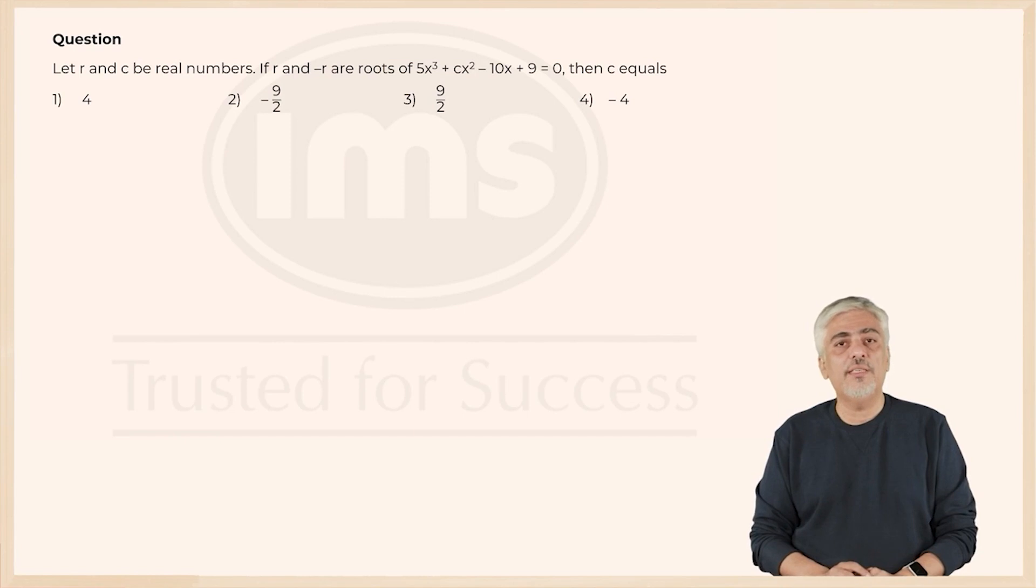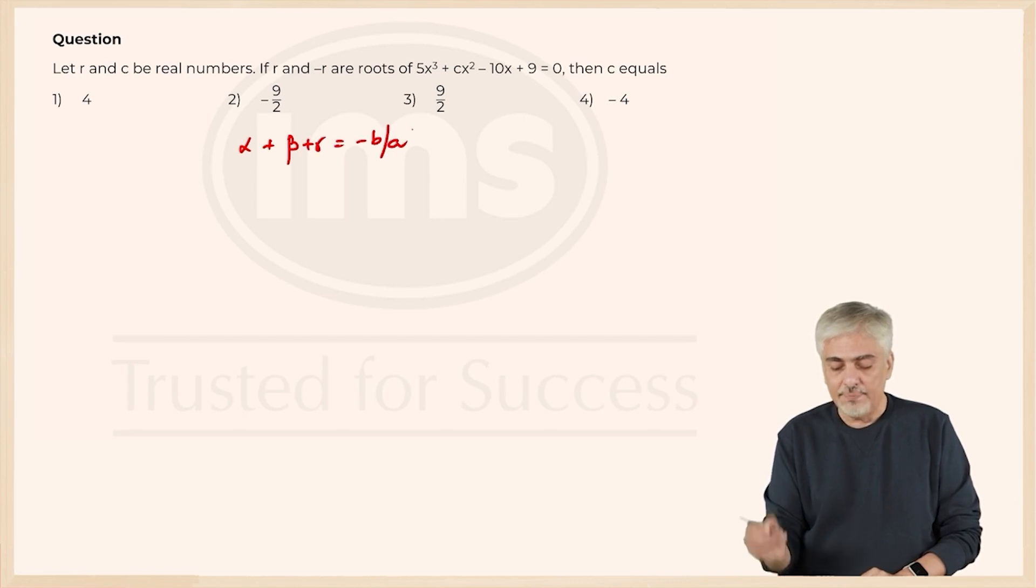Looking at one more approach, I thought let's use the sum of the roots property. What are sum of the roots? α + β + γ = -b/a. Now, one root is r, the other root was -r, third root I told you I have taken as k is -b/a that is -c/5. So, r and -r cuts out, so k = -c/5.